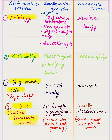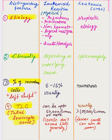Regarding the percentage of immature cells on differential leukocyte count in the peripheral smear: in leukemoid reaction, myeloid precursors such as promyelocytes, myelocytes, metamyelocytes, and band forms are usually 5–15%. In leukemia, they are much more numerous. When we find immature myeloid precursors in the peripheral smear, we call it left shift neutrophils. Left shift is more pronounced in leukemia than in leukemoid reaction.